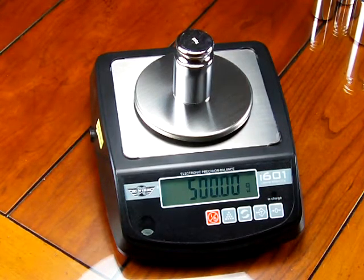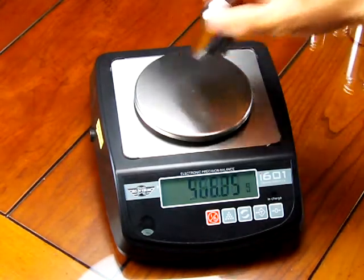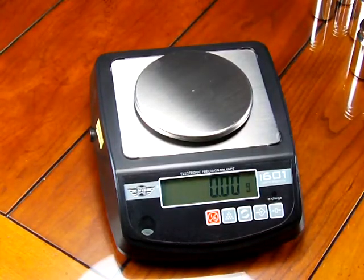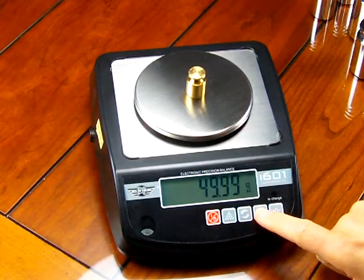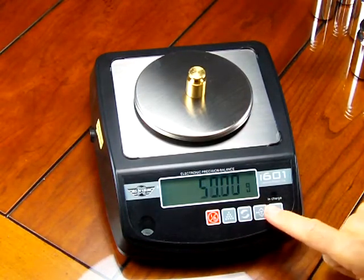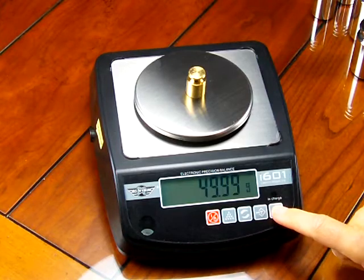The scale also has the parts counting mode. So if you wanted to count parts, it also has the ability to tare and zero. So if we were to put on, we'll say it's a 50 gram, I could tare it out.